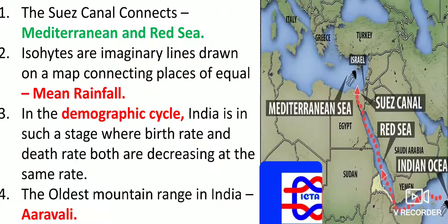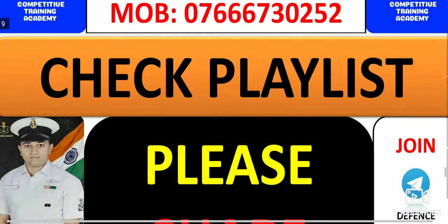The oldest mountain range in India is the Aravalli, where the Luni River exists.